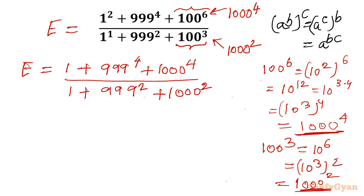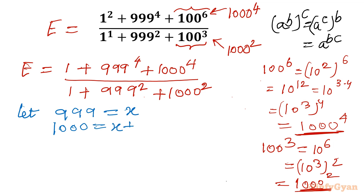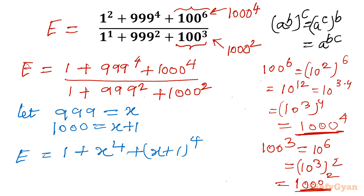Now substitution time. I will substitute 999 = x, so 1000 becomes x + 1. Our expression becomes: (1 + x^4 + (x+1)^4) divided by (1 + x^2 + (x+1)^2).